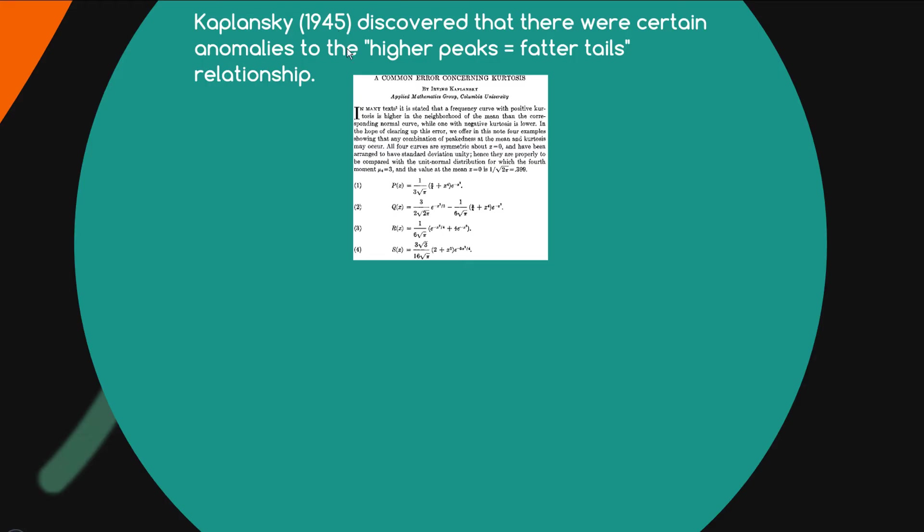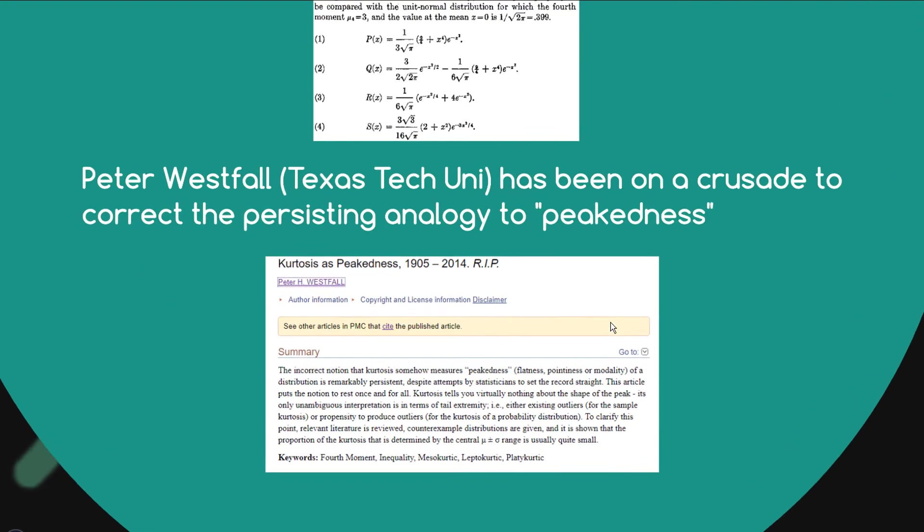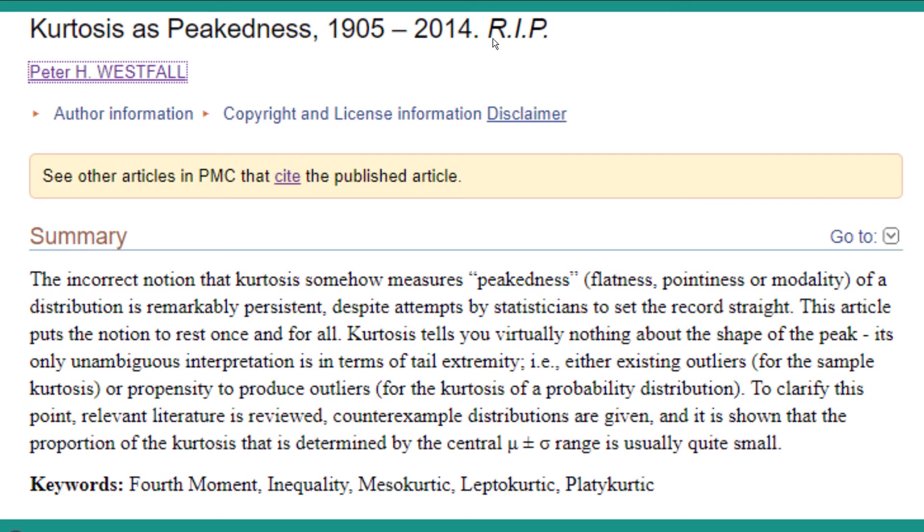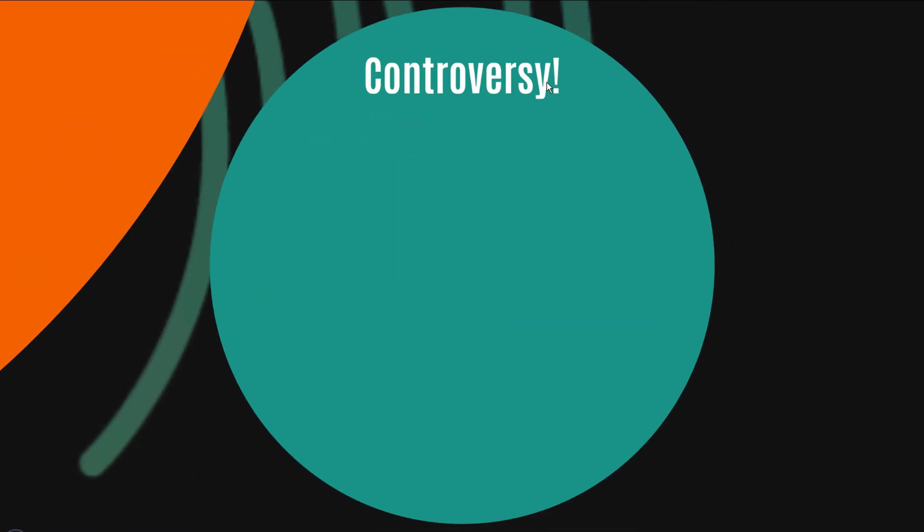But despite this happening in 1945, the connection between kurtosis and peakedness continued in textbooks, in academic papers, much to the frustration of someone from Texas Tech Uni, Peter Westfall, who's kind of been on a crusade to correct the persisting analogy to peakedness. So he actually wrote a paper some years ago called 'Kurtosis as Peakedness, 1905 to 2014, R.I.P.' where he basically is pointing out that the peakedness doesn't matter—it's all about the tails.